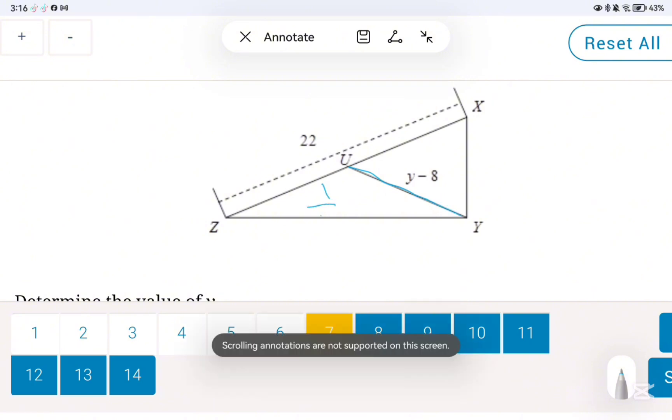Okay, so we know that the median is half of the hypotenuse, which means y minus 8 equals 11, so then y equals 19.